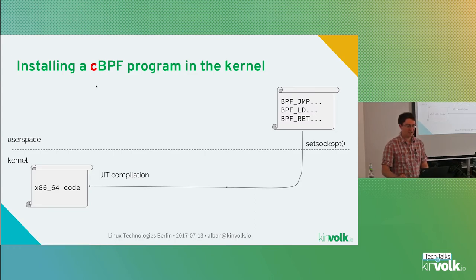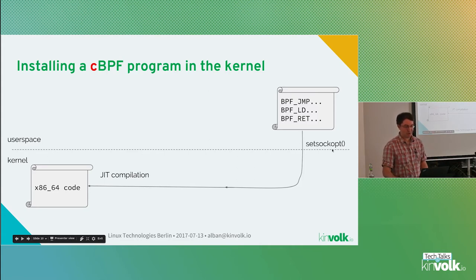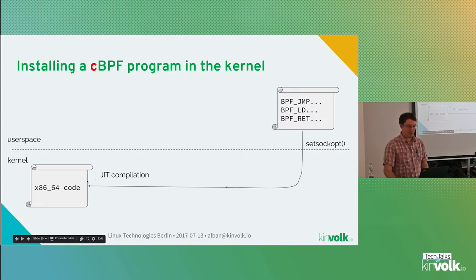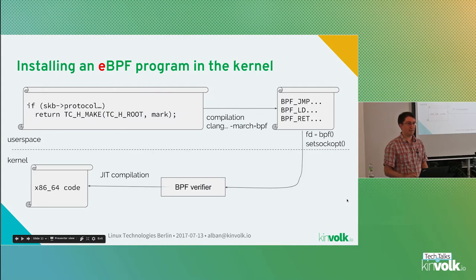First, how things work. With cBPF — classic BPF — in the old days, you would write the BPF bytecodes kind of manually. Then you could use the syscall setsockopt to attach that bytecode to a socket. The kernel would then compile that to native code and use it to filter the packets on that socket.